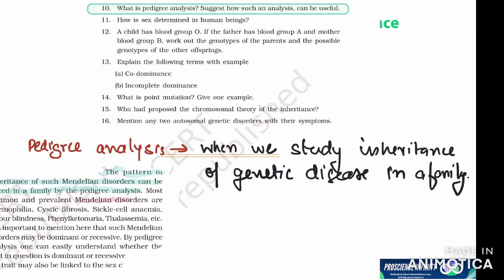Mendelian disorders include hemophilia, cystic fibrosis, sickle cell anemia, phenylketonuria, thalassemia, etc.